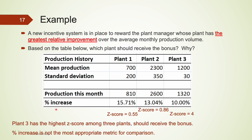However, a more accurate approach is to use z-scores, since we have both the mean and standard deviation. For plant one, z = (810 − 700) ÷ 200 = 0.55. For plant two, z = 0.86. For plant three, z = (1,320 − 1,200) ÷ 30 = 4. Plant three has the highest z-score, meaning it had the greatest relative improvement. Using z-scores, plant three should receive the bonus, and percentage increase alone is not the most appropriate metric for this comparison. This concludes the video.